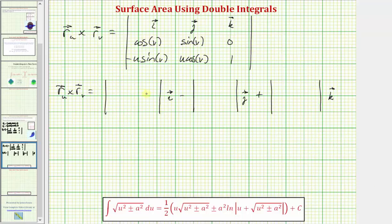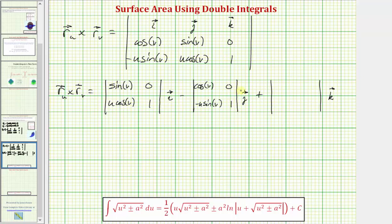Using the expansion by minors method, for the first two-by-two determinant we eliminate row one and column one, giving us sine v, zero, u cosine v, and one. For the second, we eliminate row one and column two: cosine v, zero, negative u sine v, and one. For the last, we eliminate row one and column three: cosine v, sine v, negative u sine v, and u cosine v.